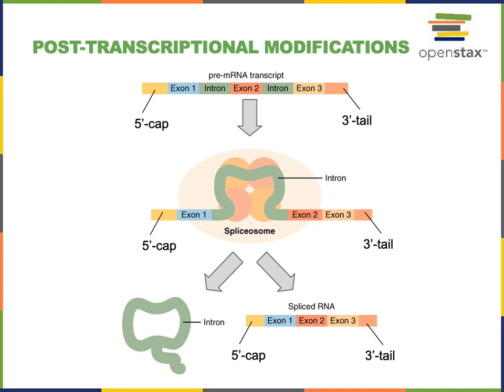Only the exons will be translated to produce a polypeptide, and therefore the introns must be removed before translation. A structure known as a spliceosome will cut the introns out and join exons together in order to produce a mature messenger RNA that can then be translated by the ribosomes. The introns will then be degraded by nucleases, recycling those nucleotides to build new RNA in the process of transcription.